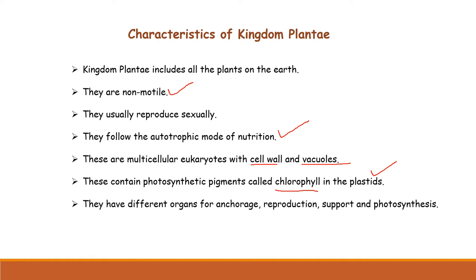Plants have different organs for carrying out different functions. They have specialized organs for reproduction and for carrying out photosynthesis. For example, photosynthesis occurs in the leaf — the leaf is specialized for carrying out photosynthesis.